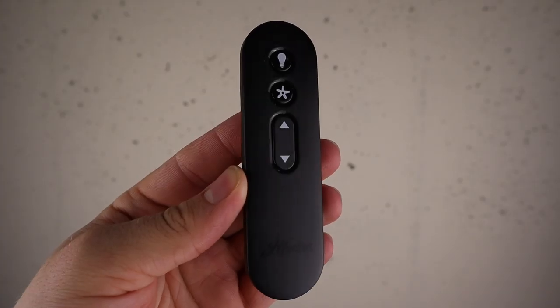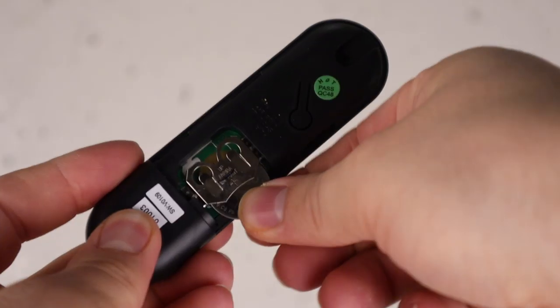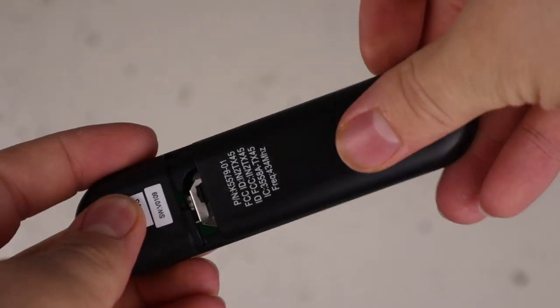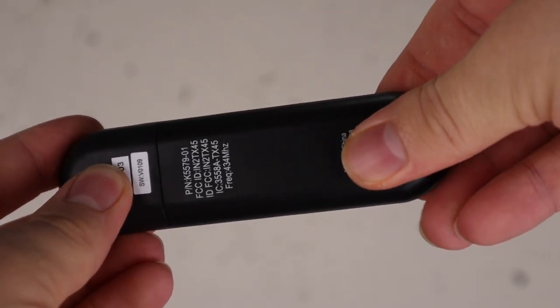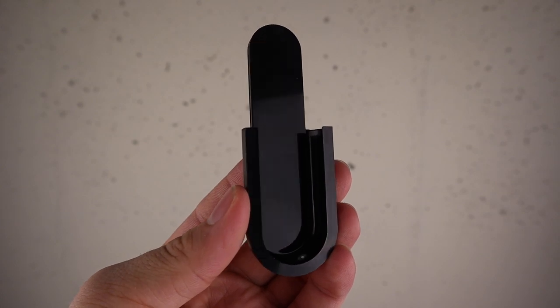Locate the handheld remote and battery. Remove the battery compartment door, install the battery as shown, then replace the compartment door. You can mount the included cradle in any location where you'd like to store the remote.